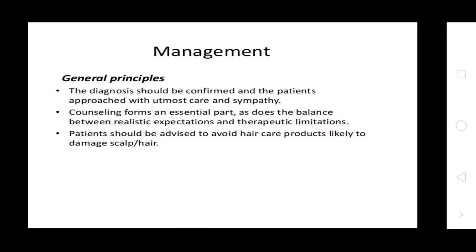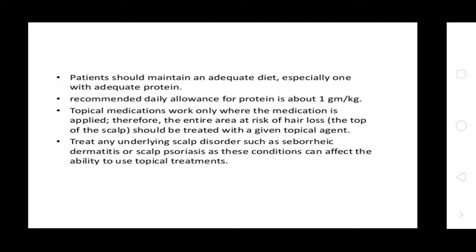Management of Alopecia — General Principles. The diagnosis should be confirmed and patients approached with care and sympathy. Counseling forms an essential part, balancing realistic expectations with therapeutic limitations. Patients should be advised to avoid hair products likely to damage scalp hair, and should maintain an adequate diet, especially one with adequate protein — the recommended daily allowance for protein is about 1 gram. Underlying scalp disorders such as seborrheic dermatitis and scalp psoriasis should be treated, as these conditions can affect the ability to use topical treatments.